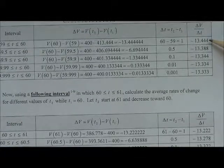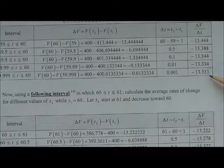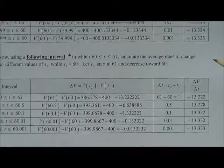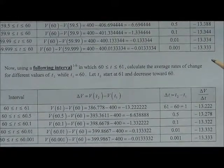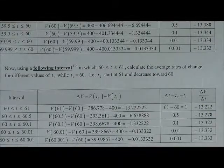Whereas the values in the preceding interval were increasing from negative 13.444 up to negative 13.333. So notice that in both sides, preceding and following, the two rates of change are zeroing in on the same value.